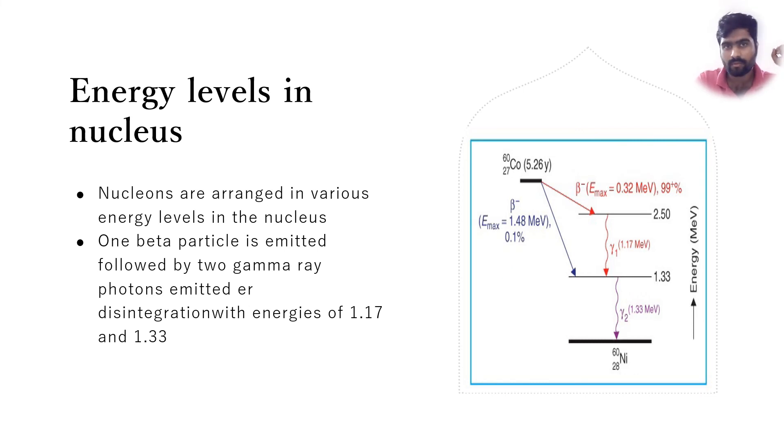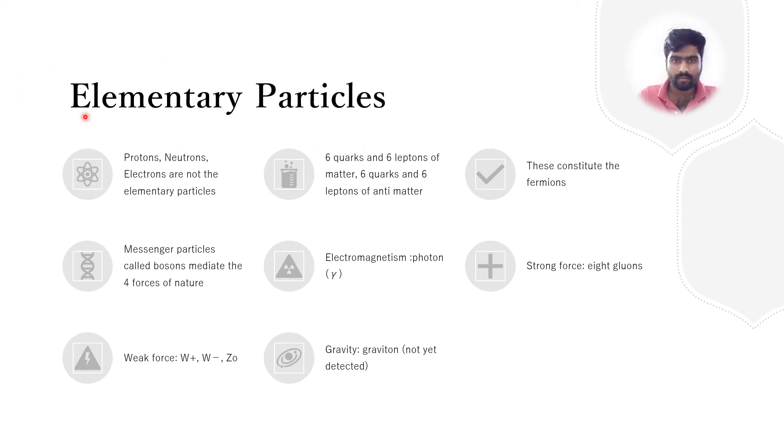Now let's talk about elementary particles. As I discussed in the first, protons, neutrons, and electrons are not the elementary particles. They can be subdivided further. If we look at the basic elementary particles, there are matter and antimatter. In matter and antimatter, they have quarks and leptons: six quarks and six leptons each. Together they constitute something called the fermions.